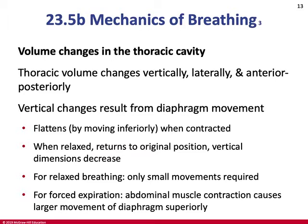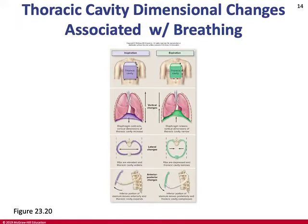Volume changes in the thoracic cavity result in pressure changes inside it. Vertical changes result from diaphragm contraction — it flattens when contracting, enlarging the chest cavity, and returns to a domed shape when relaxed. For relaxed breathing, only small movements are needed, but in forced expiration the abdominal muscles push the diaphragm upward, shrinking the cavity more and allowing more air to be expelled.